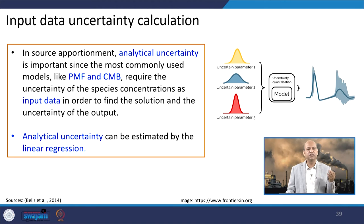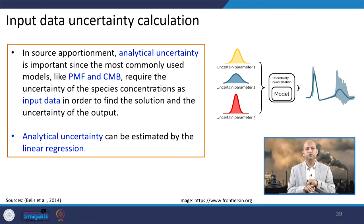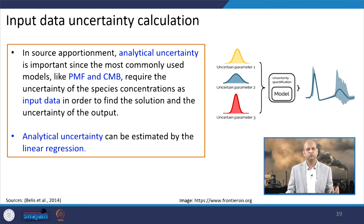Uncertainty calculations and sensitivity analysis are also important. PMF and chemical mass balance require uncertainty of species concentrations as input data to produce uncertainty estimates of the output. Analytical uncertainty can be estimated by linear regression.